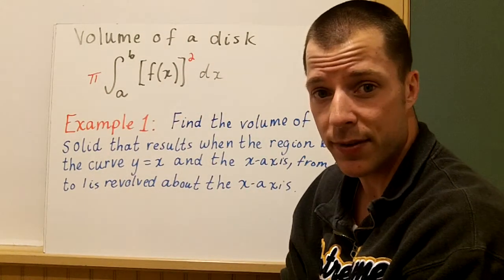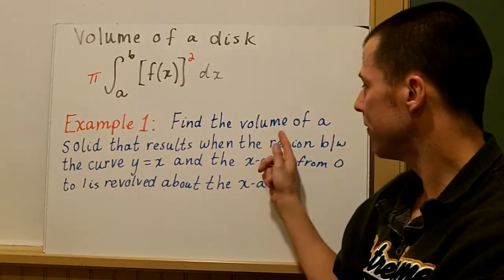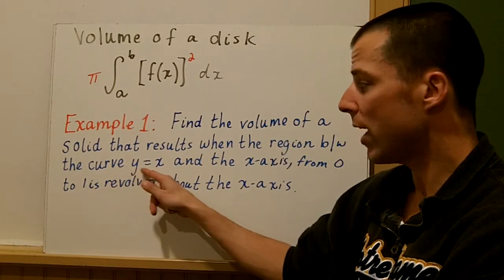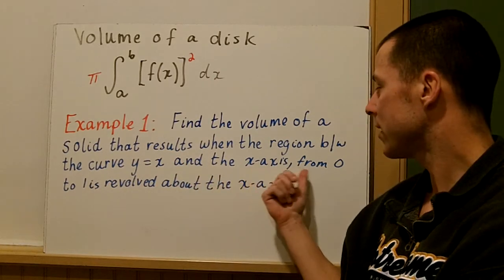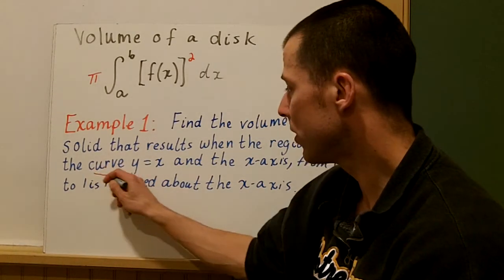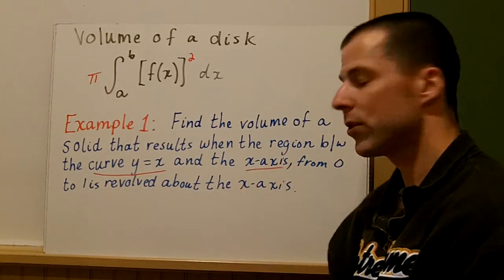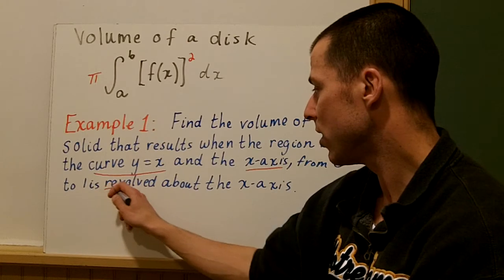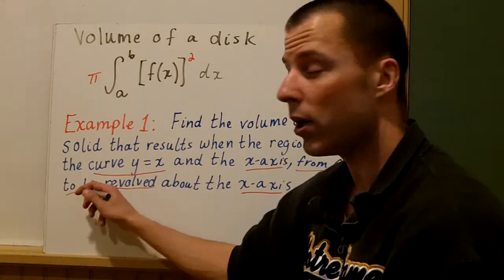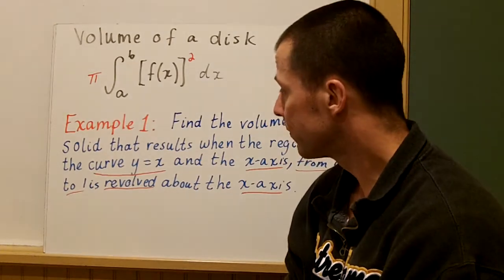Usually it's going to be a vertical slice, and we'll show when we slice horizontally as well. In this first example: find the volume of a solid that results when the region between the curve y equals x and the x-axis from 0 to 1 is revolved about the x-axis. We have one curve — really a line — and we're going from 0 to 1, so a to b is 0 to 1.